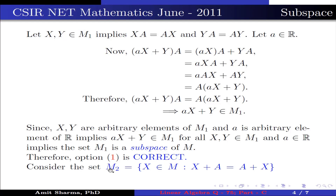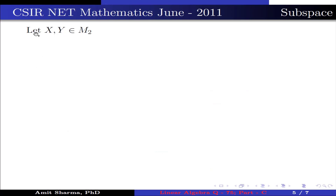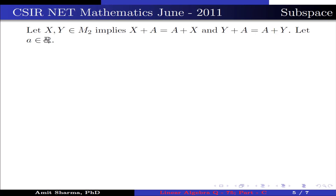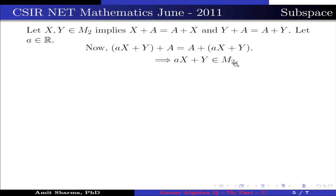Now consider the set M2 containing x belonging to M such that x + A = A + x. This implies M2 is not equal to the empty set, by the same argument as M1. Let x, y belong to M2. This implies x + A = A + x and y + A = A + y. Let α belong to R. Now, (αx + y) + A = A + (αx + y). This implies αx + y belongs to M2.